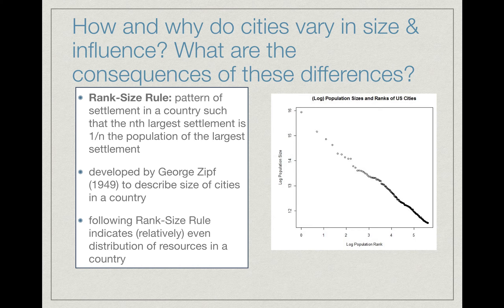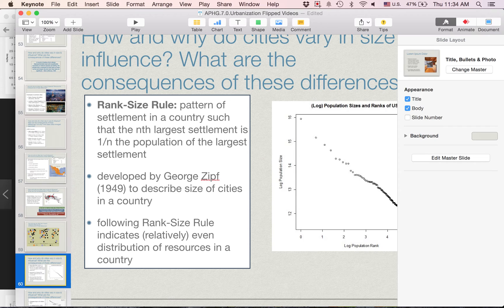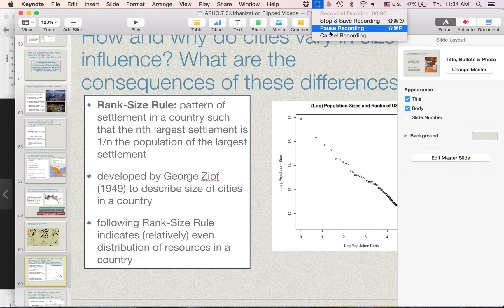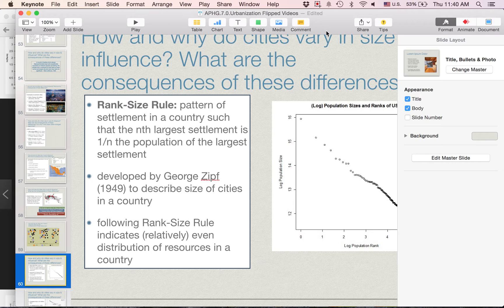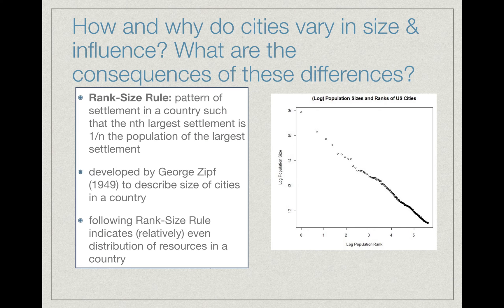Rather than having one city that's so enormously different in population than others, we have a very organized fashion of settlement. Rank-size rule is a pattern of settlement — so it's not exactly a rule, but you can think of it almost like a qualification.